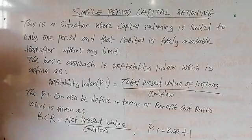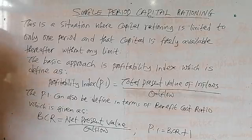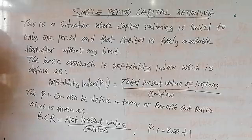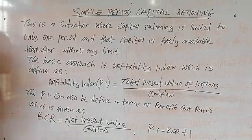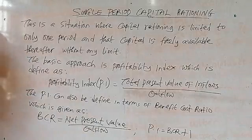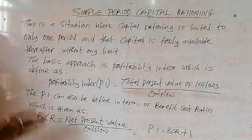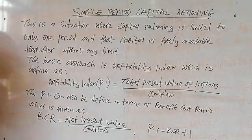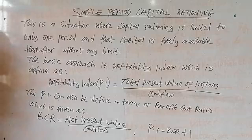Before making our decision for all of these, under single-period capital rationing, in order to know which project to allocate the available funds to first, and in which order we should allocate funds to the available projects, we use the Profitability Index or the Benefit-Cost Ratio to determine which project we should invest in first. We compute the Profitability Index for all projects to know which one gives us the highest Profitability Index, then allocate our resources in that order.